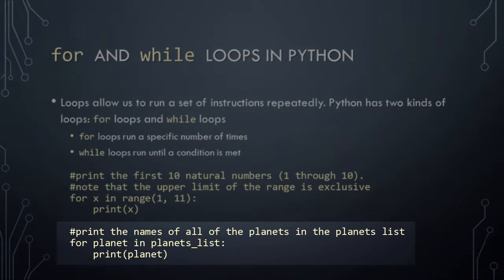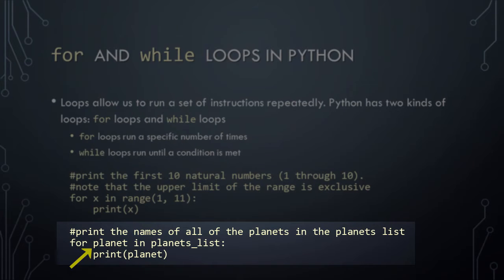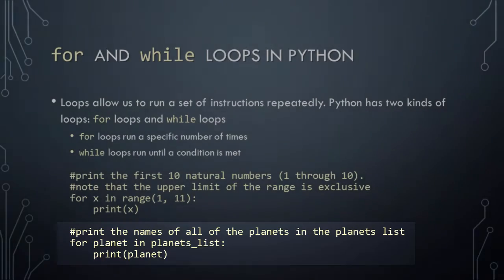This next for loop is very similar to the previous example, except that we're using 'planet' as the name of the loop's control variable, and we're using a list of planets as the set of items through which the loop will iterate. This loop will thus print the name of each planet in the planets list.